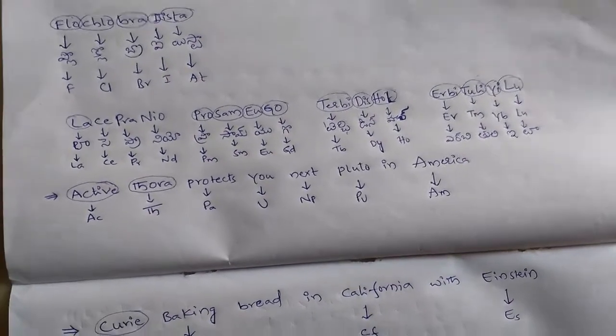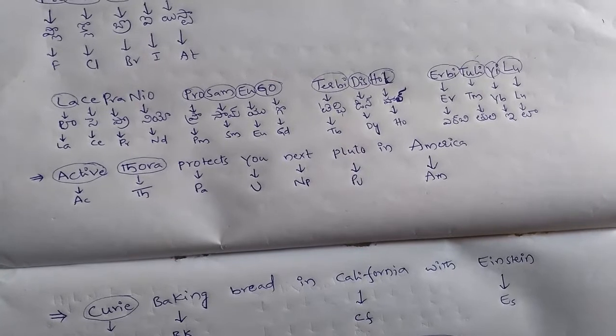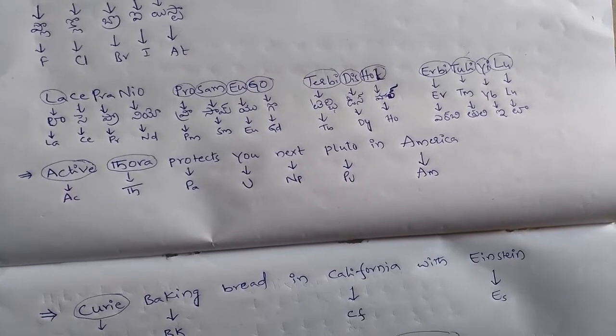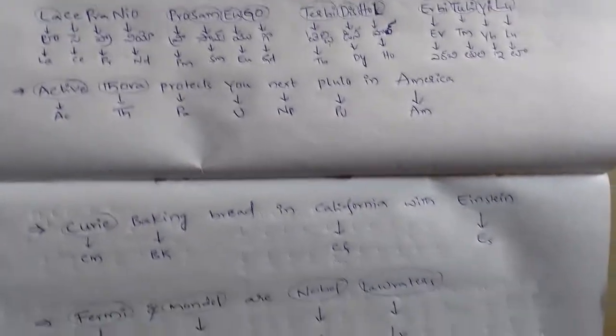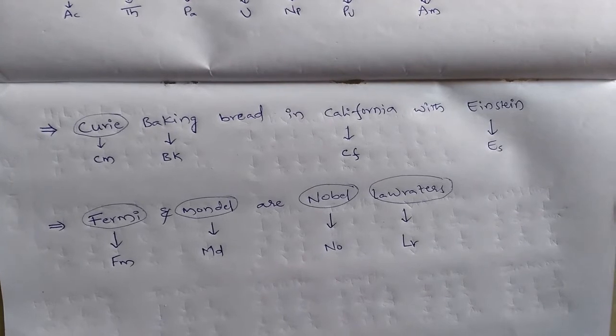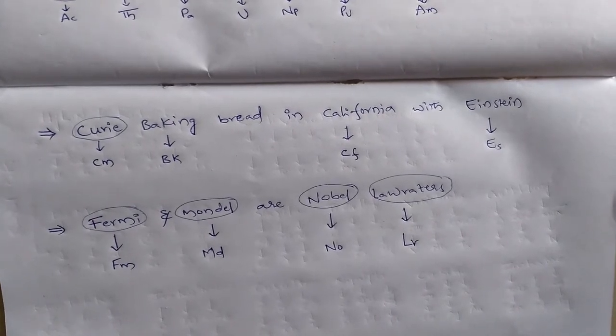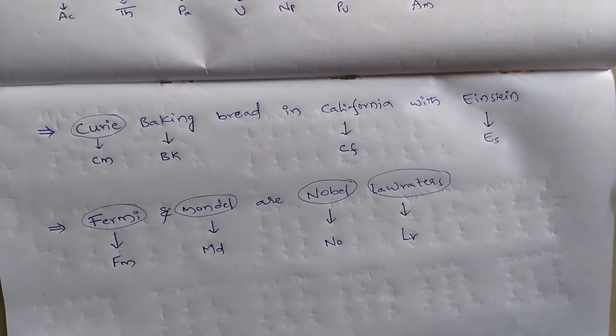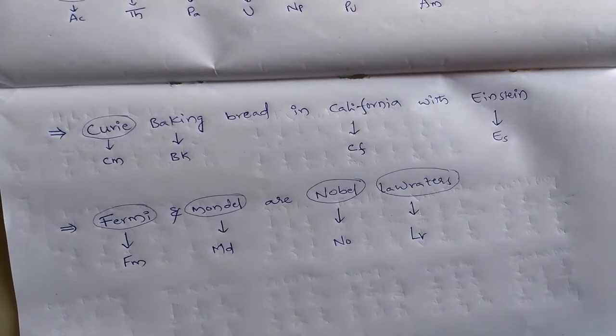Next, actinides. Here I'm giving a different method to remember actinides. Active Tora protects you next Pluto in America. Active means actinium, Tora means thorium, Protects means protactinium, U means uranium, Next means neptunium, Pluto means plutonium, America means americium. Next, Curie baking bread in California with Einstein. Curium, Berkelium, Californium, Einsteinium. Next, Fermi and Mendel or Nobel Laureates. Fermium, Mendelevium, Nobelium, Lawrencium.